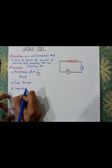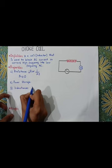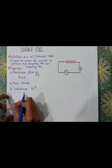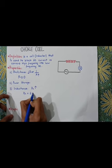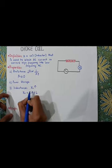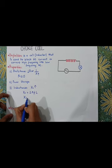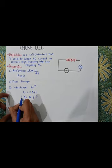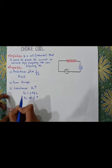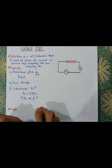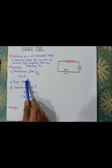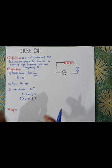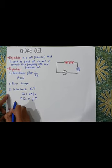The third property is inductance. Choke coil is a material where inductance is maximum. From the formula XL = 2πfL, we can say that XL is directly proportional to frequency — the greater the frequency, the greater the inductance. So the resistance is negligible and inductance is maximum.